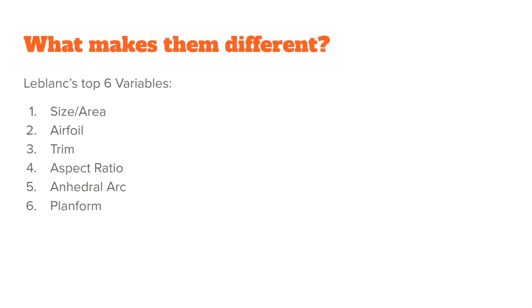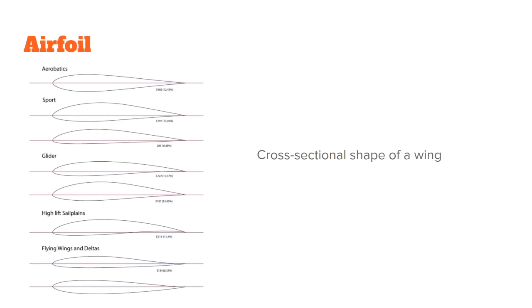We've already talked a little bit about airfoil. An airfoil is simply the cross-sectional shape of a wing. Even in airplanes, depending on if you want an aerobatic plane versus a glider, or a high-lift sailplane versus just normal flying, different airfoils are going to provide either more lift or more glide depending on what you're going to use it for. Same thing applies to parachutes.